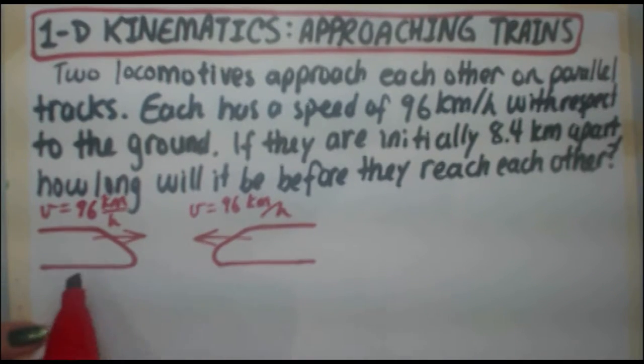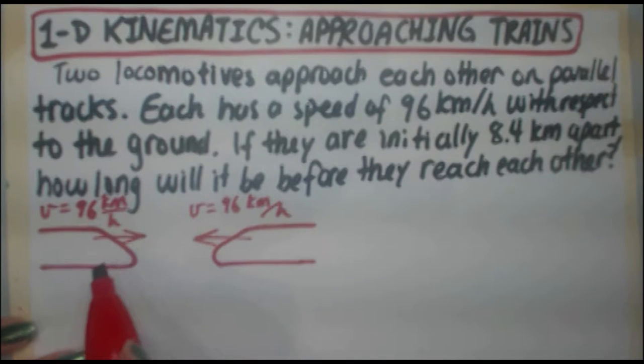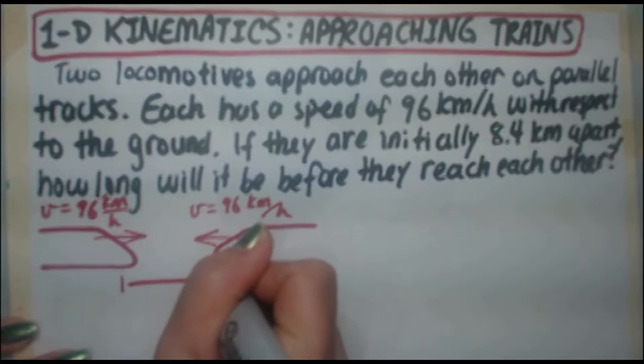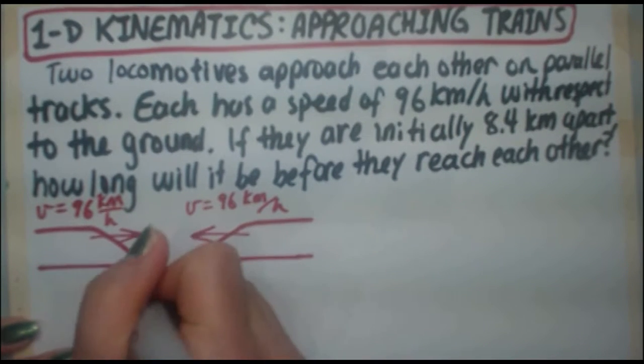This is the scenario you've got. You've got the two trains, they're both traveling towards each other at 96 kilometers per hour. The distance between the two trains is 8.4 kilometers.